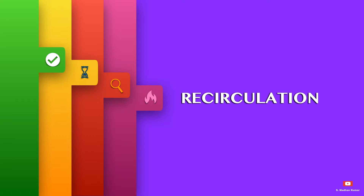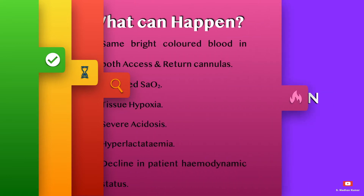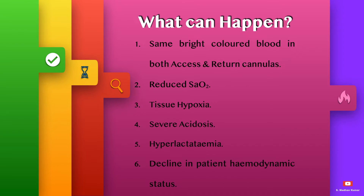Hello everyone. Under the ECMO Troubleshooting Simplified series, today we will see about recirculation on VV ECMO. It can lead to the same bright colored blood in both the access cannula and the return cannula — that is, the venous and arterial cannula. Saturation will be reduced, tissue hypoxia can be seen, severe acidosis can be noted, hyperlactatemia can occur.